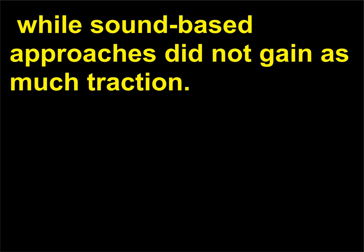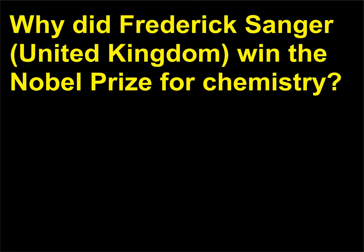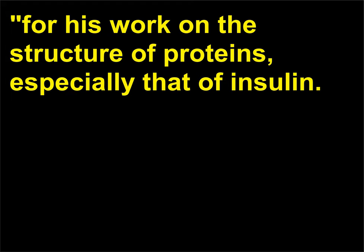Why did Fredrik Sanger, United Kingdom, win the Nobel Prize for Chemistry? For his work on the structure of proteins, especially that of insulin.